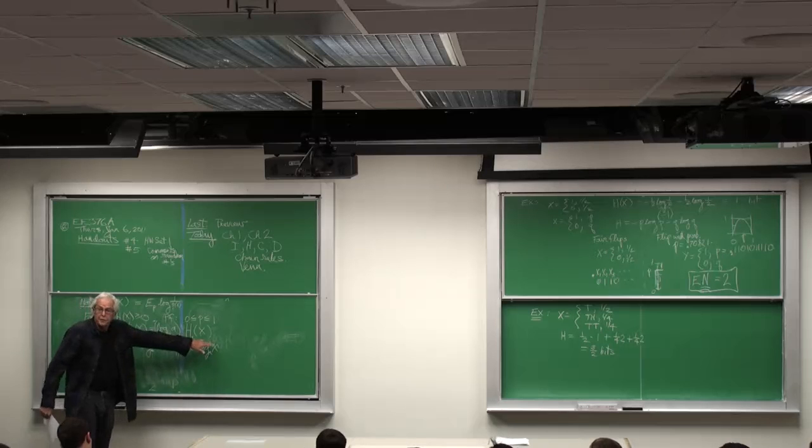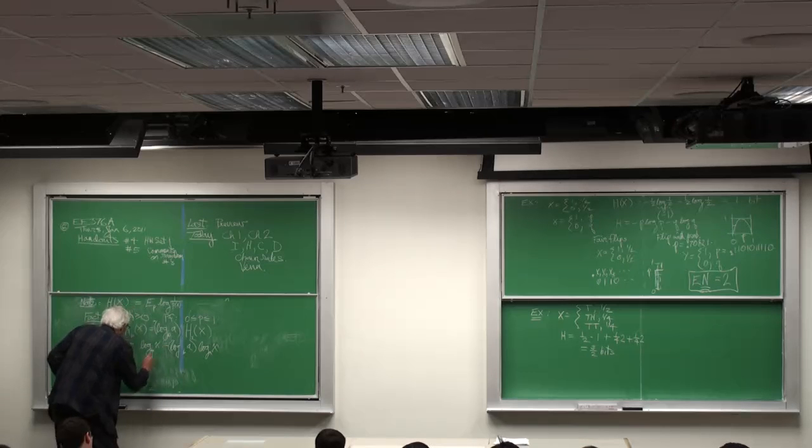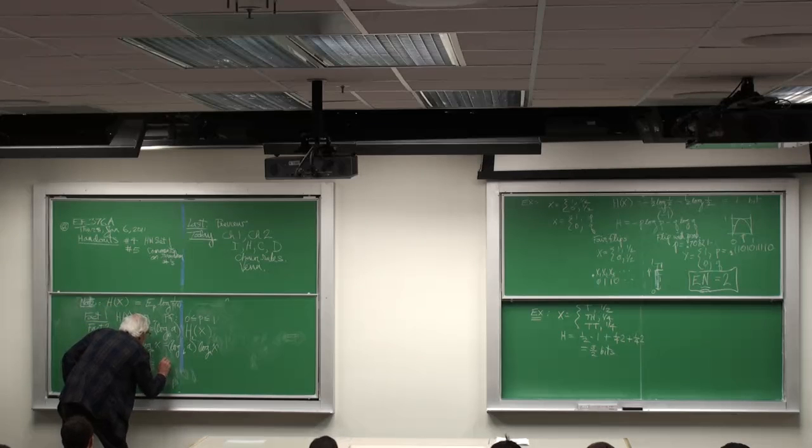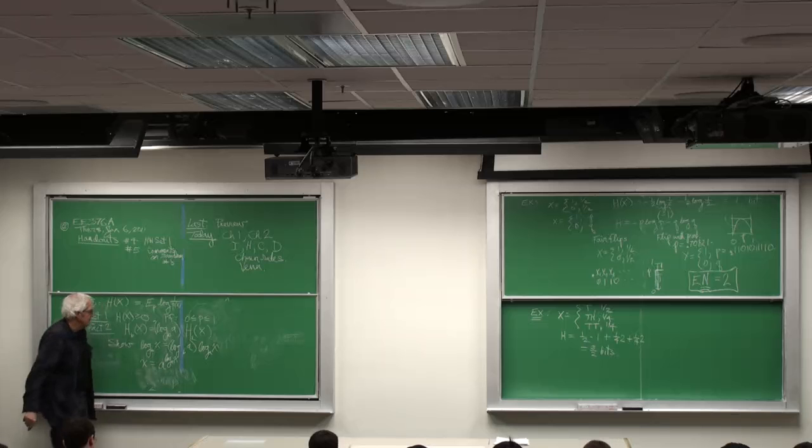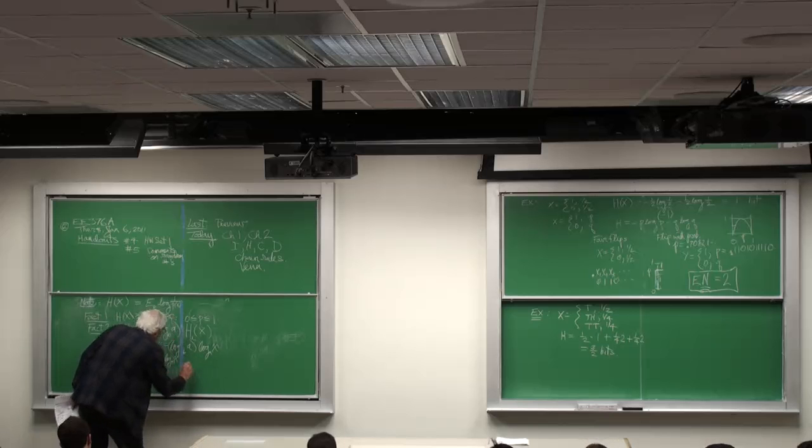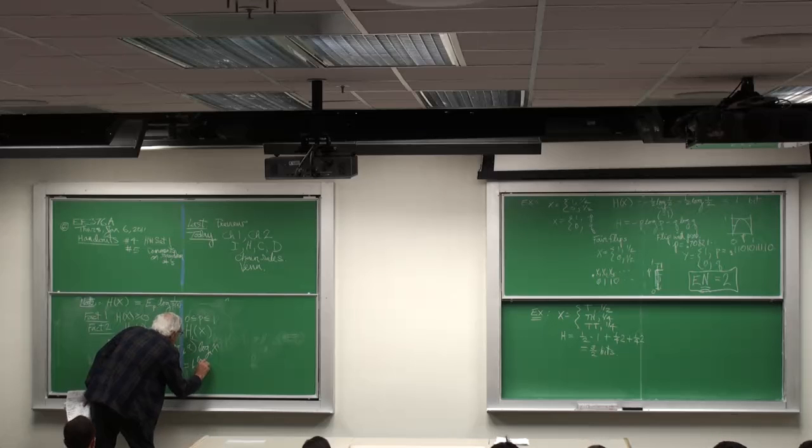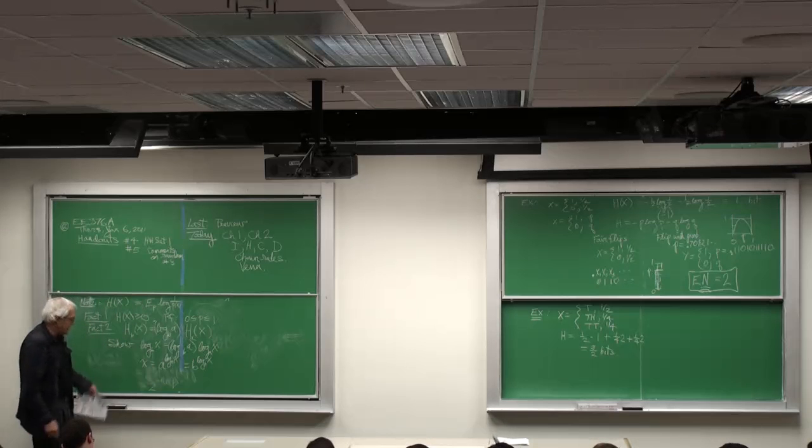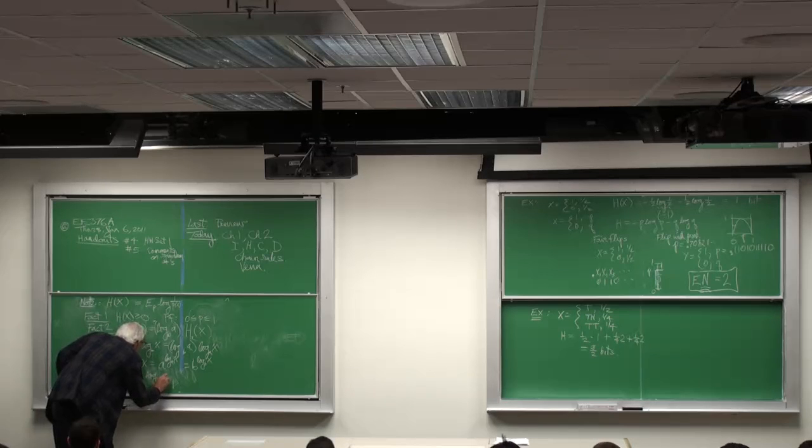And of course this is elementary, but you may have forgotten it. The proof is simple. You write x is equal to a to the log to the base a of x. This is an identity: a to the log to the base a of x is x. Similarly if I write it as b to the log to the base b of x, that's an identity. Then take log to the base b of both sides.